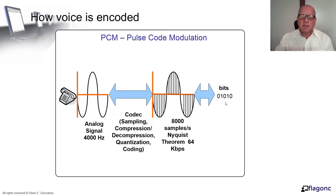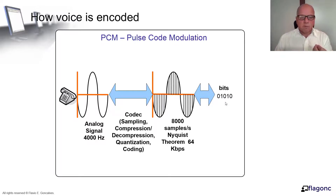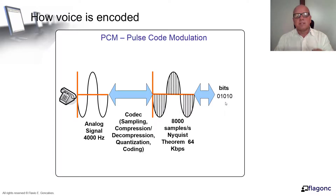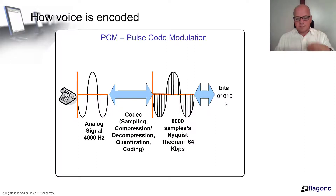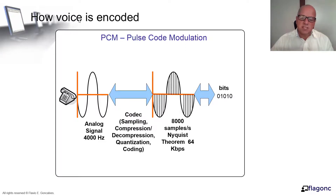That's how voice works: when you start with your mechanical voice, it goes to the phone, a microphone converts it into an electrical signal. This electrical signal is sampled, compressed, quantized, and encoded into a digital signal — sampled at twice the bandwidth of the analog signal — and this generates a stream of bits that can be transmitted on a digital network.